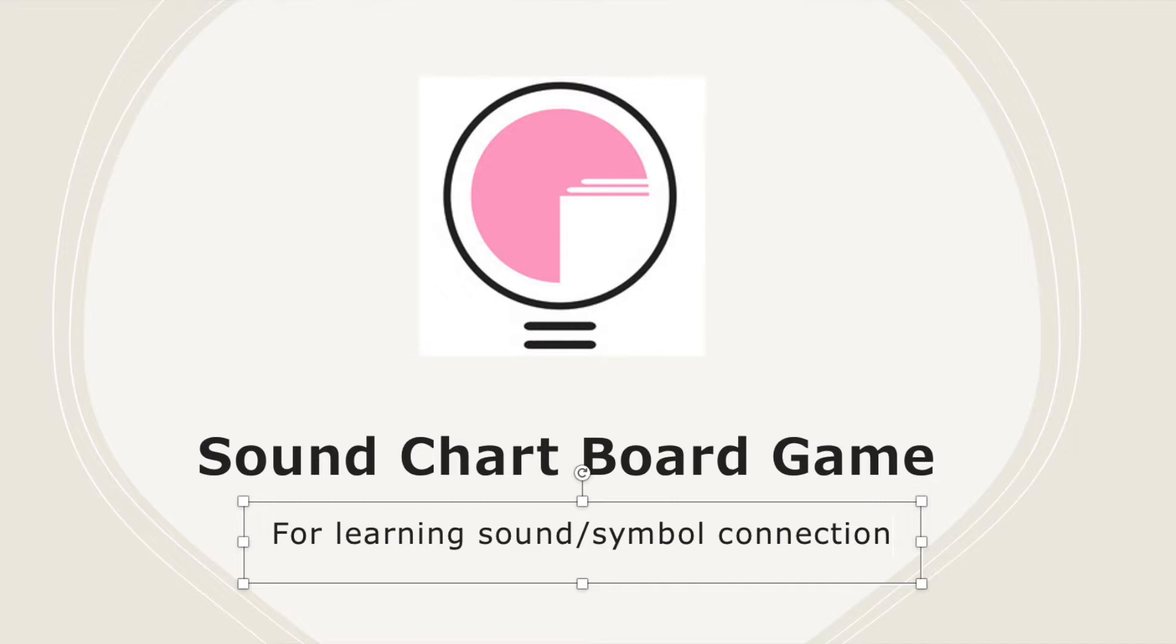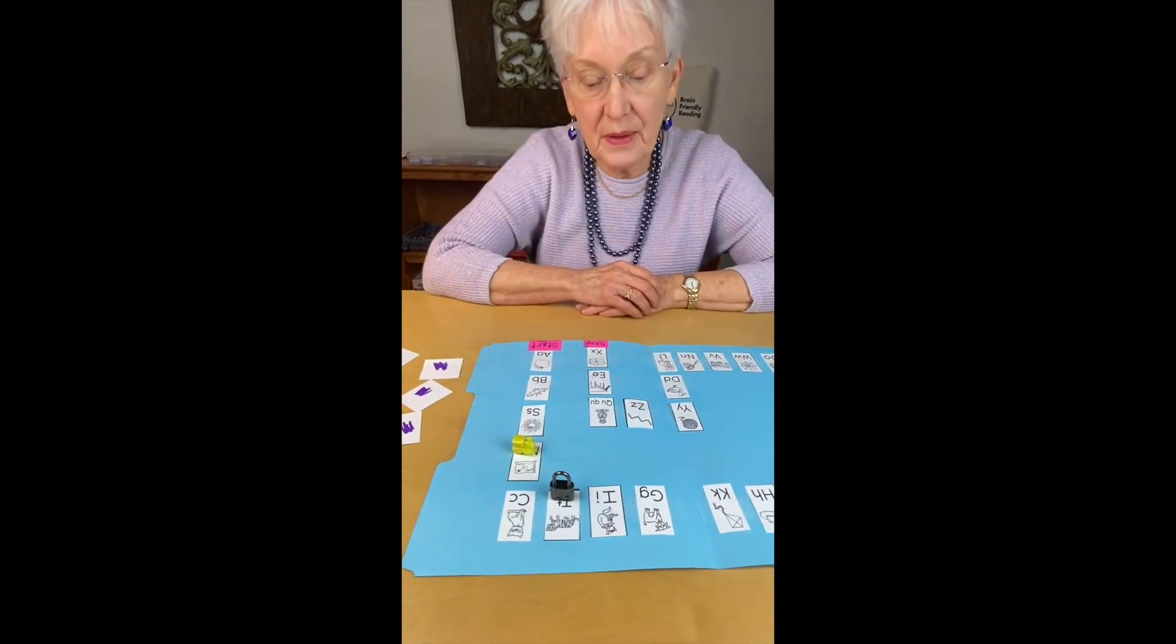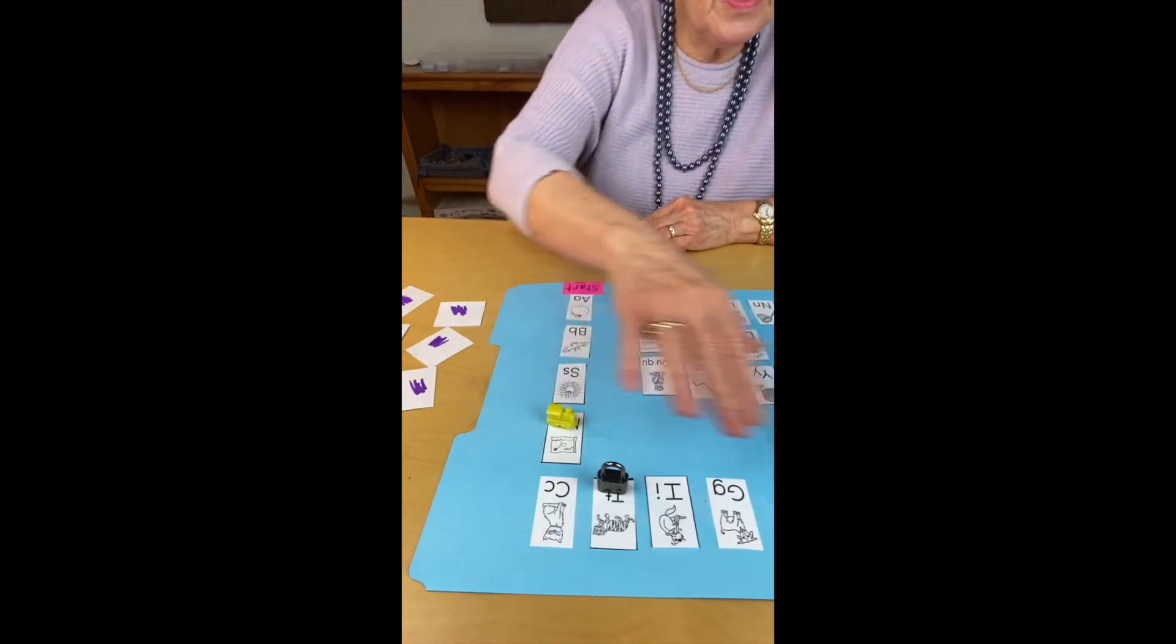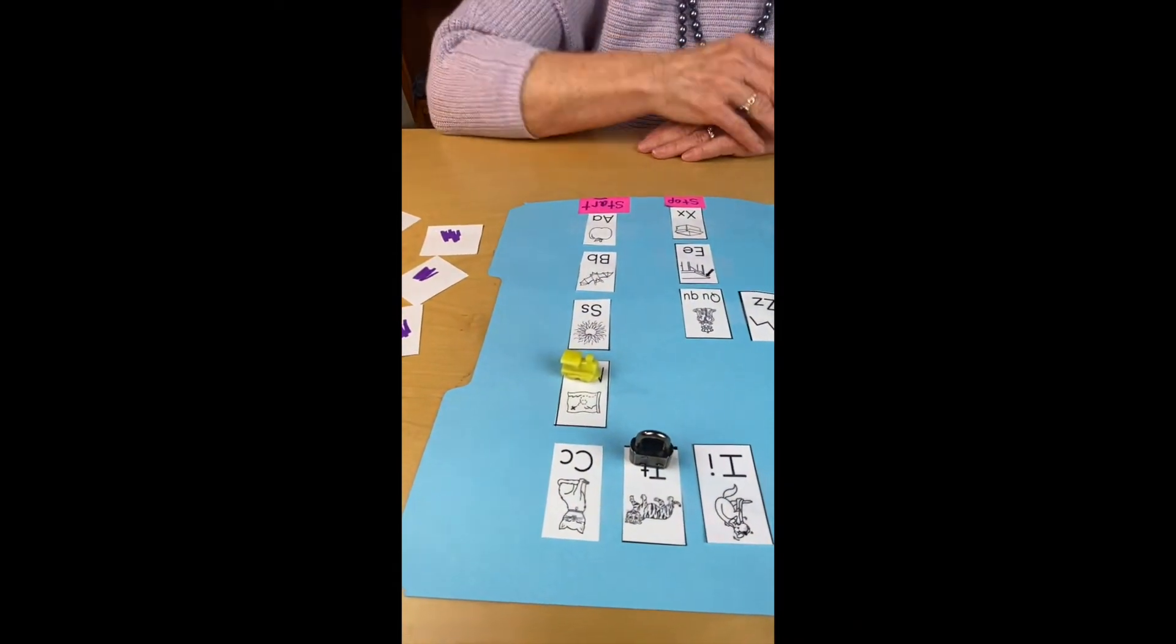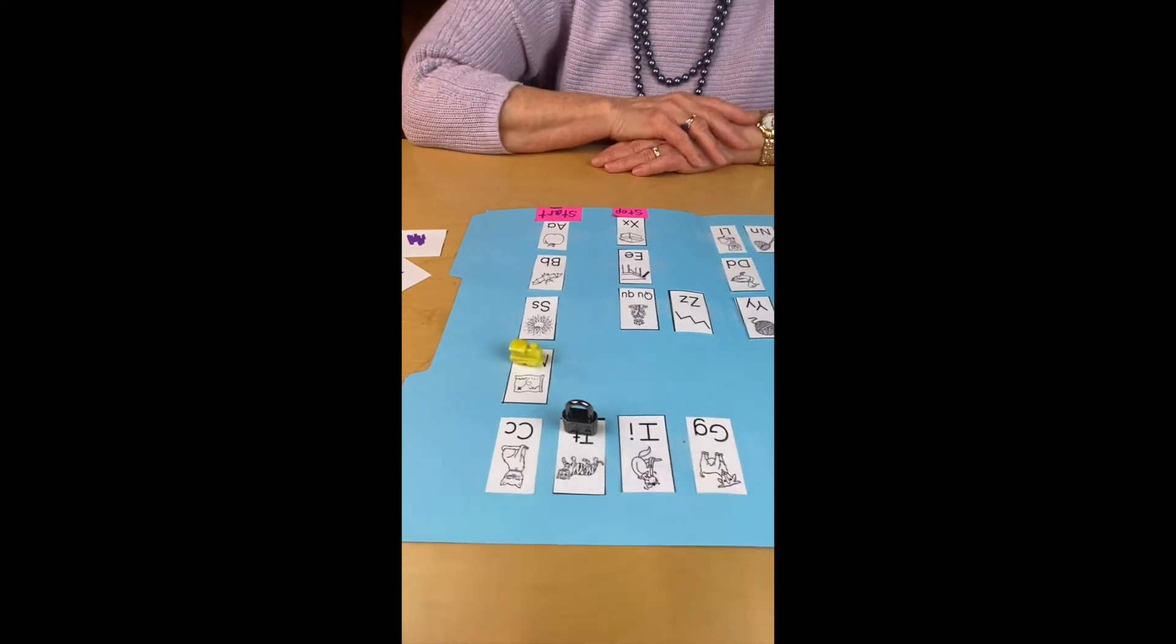This game is called the chart board game. This game has been made from a chart that's been cut apart and taped down onto a file folder. You can make the trail look any way you want it.